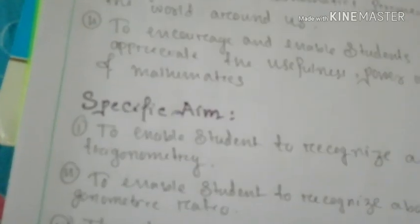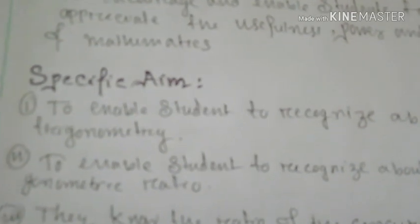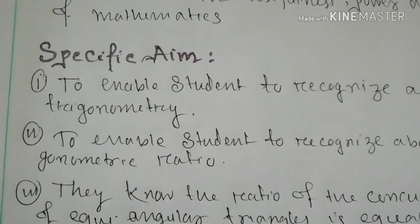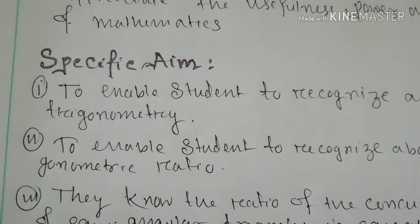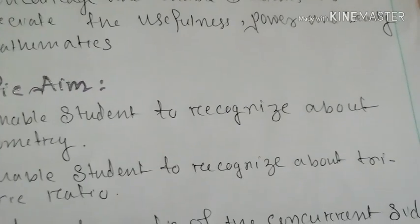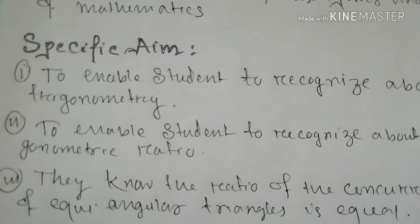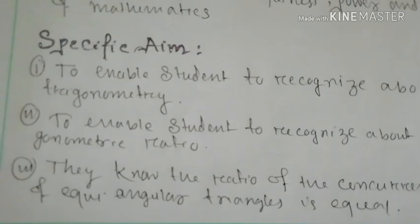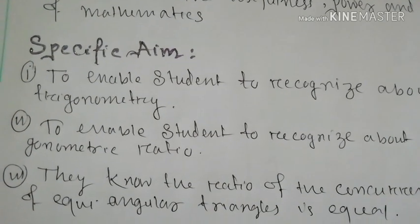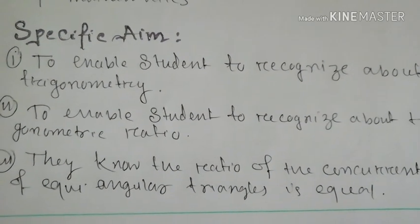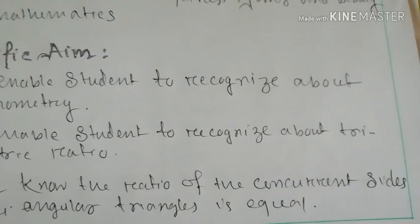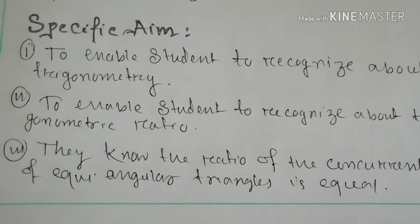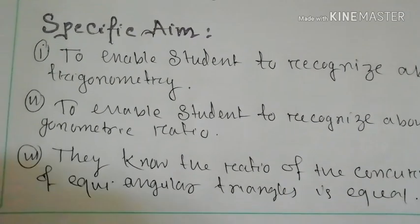Next is the specific aim. Here I include three specific aims. Number one, to enable students to recognize about trigonometry. Number two, to enable students to recognize about trigonometric ratios. Number three, that they know the ratio of corresponding sides of equal angular triangles is equal.